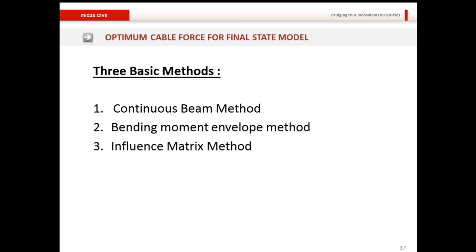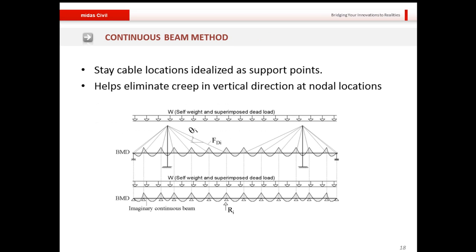For initial cable force finding, there are three basic methods: the continuous beam method, the bending moment envelope method, and the influence matrix method. In the continuous beam method, the points of connectivity between the cable and deck are idealized as pin supports, and the reaction R at each support is found — from which cable forces are directly obtained. This method helps eliminate creep in the vertical direction at nodal locations and gives a uniform displacement profile.